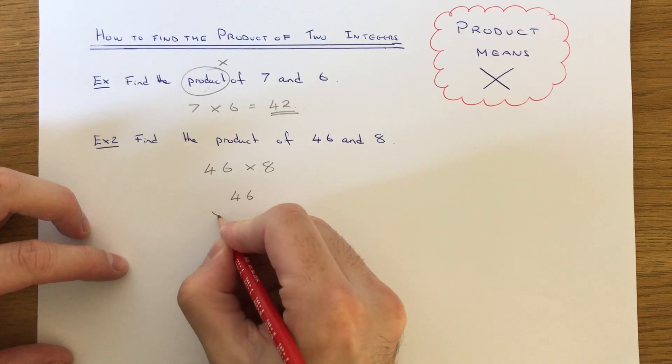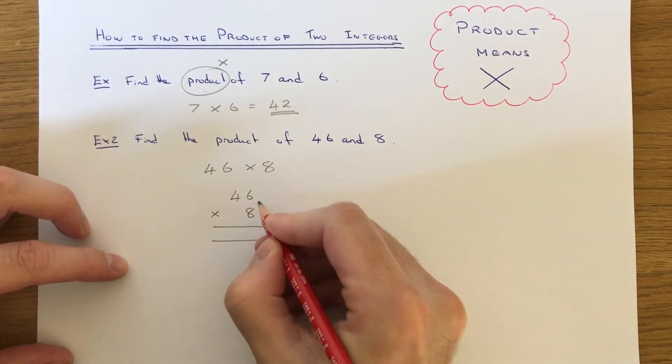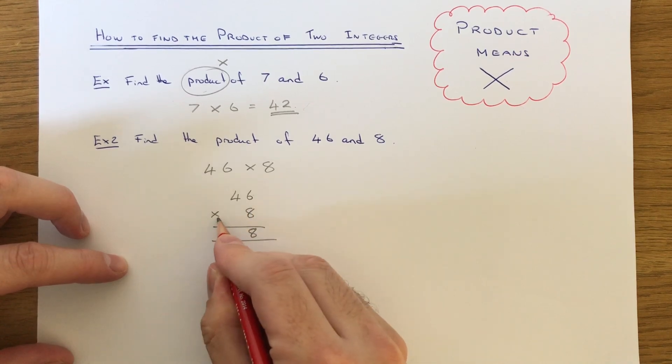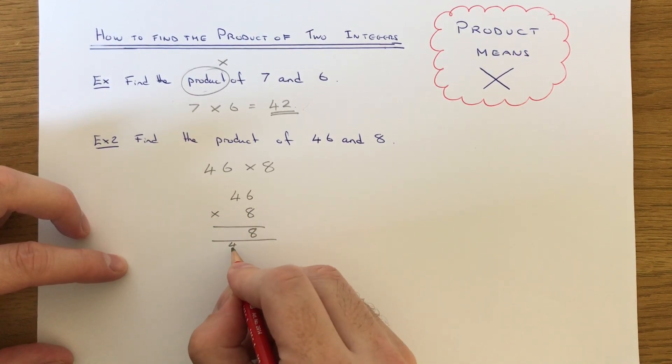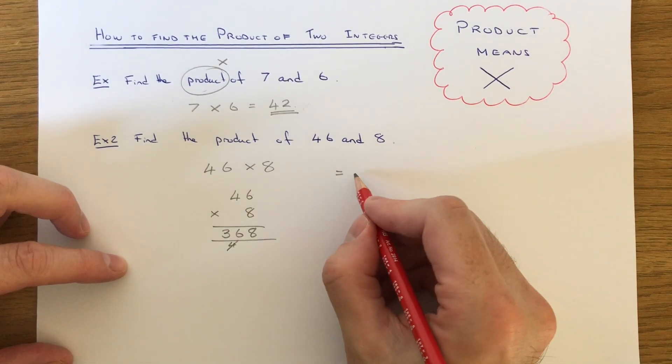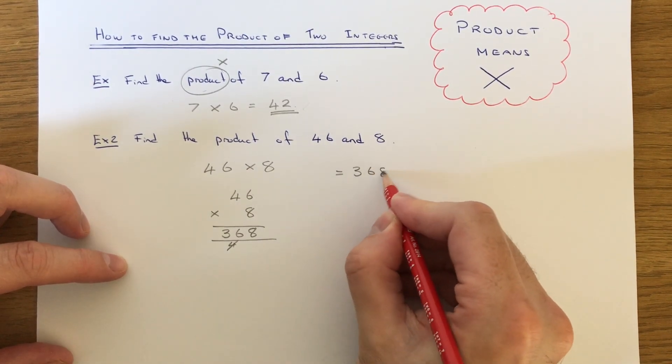It's probably best to do this in columns. So six times eight is 48. Eight, four times eight is 32 plus the four is 36. So the product of 46 and eight is 368.